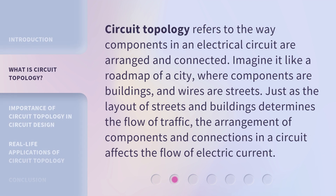Circuit topology refers to the way components in an electrical circuit are arranged and connected. Imagine it like a roadmap of a city, where components are buildings and wires are streets. Just as the layout of streets and buildings determines the flow of traffic, the arrangement of components and connections in a circuit affects the flow of electric current.